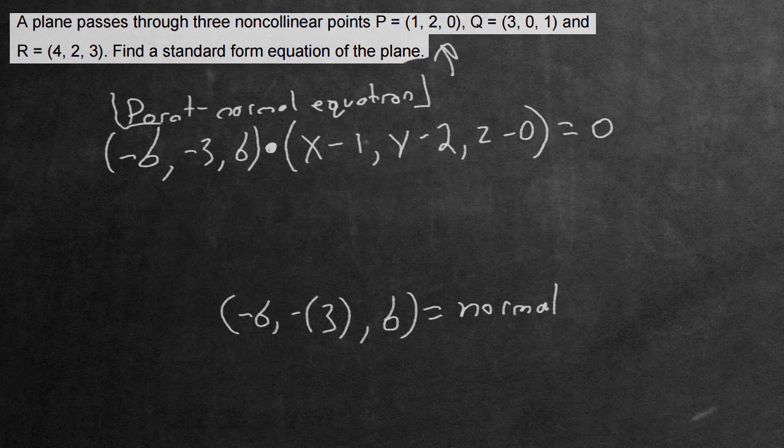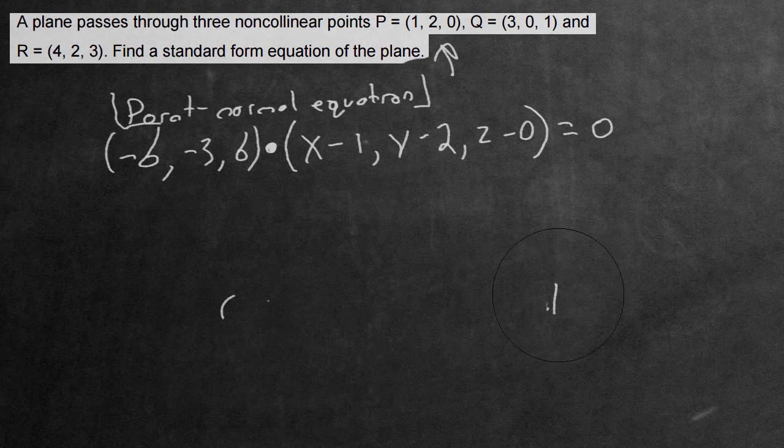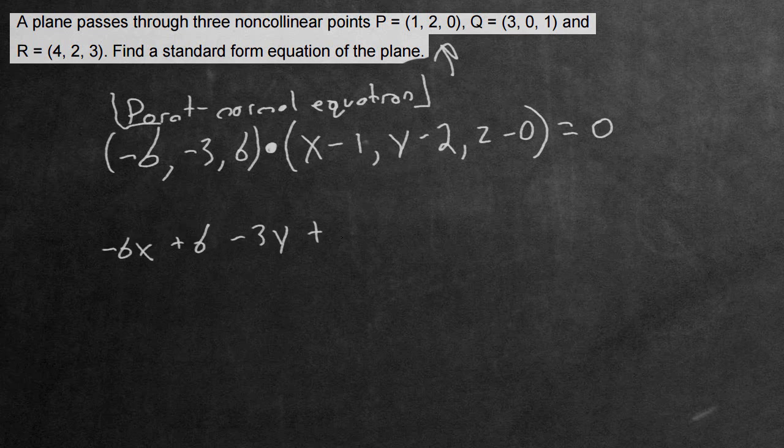But what they're asking us to find is the standard form. So let's go ahead and do that. All we have to do is multiply everything throughout. So negative 6 times x is negative 6x. Then negative 6 with negative 1 is positive 6. Then negative 3 multiply y is negative 3y, and we have positive 6, 6z. Let's equal this to 0.